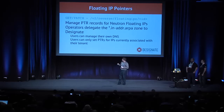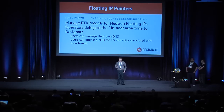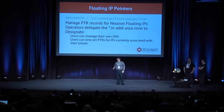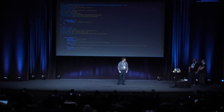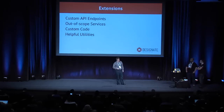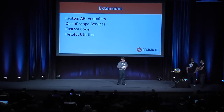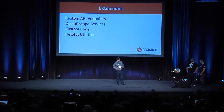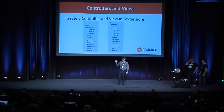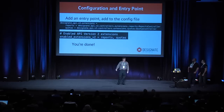You can also make PTR records to your floating IPs in Neutron. An operator would delegate the in-addr.arpa zone to Designate, and then users could make PTR records associated with IPs on their tenant in Neutron. Extending the API is also very easy. You might want to change how something works, add a custom endpoint, or add custom code. All you need to do is create a controller and a view using Falcon, add an entry point, add it to your configuration file, and you're good to go.